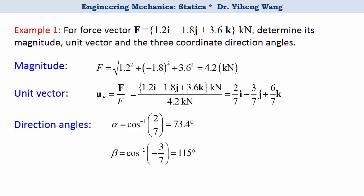And similarly, beta equals arc cosine the y component of the unit vector, negative 3 over 7, and also gamma equals arc cosine 6 over 7. And now we calculated the magnitude, the unit vector, and the direction angles. And that answers this question.